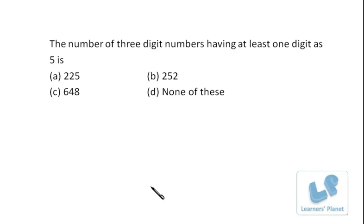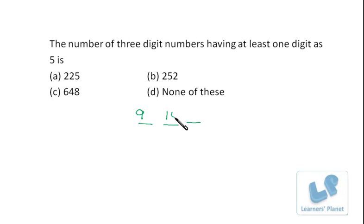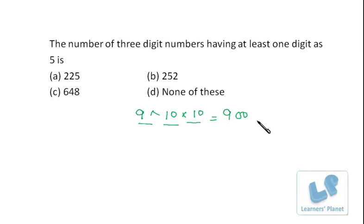So I take a reverse approach. For the total number of three-digit numbers, there are three places. For the first place, we have nine choices. For the second place, we have ten, and for the third place, we have ten. So in all, there are 900 three-digit numbers.